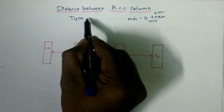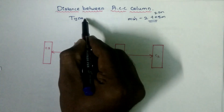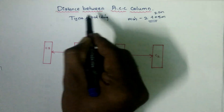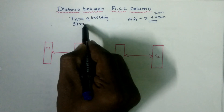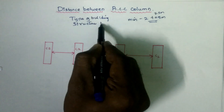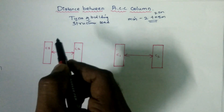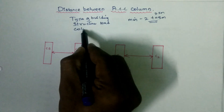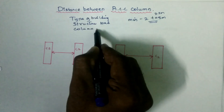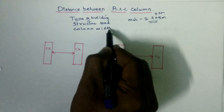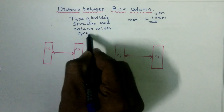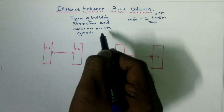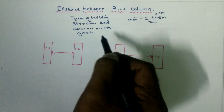First, what type of building are you doing — single-story or multi-story? Next is the structural load. We will consider the height of the RCC column and the width. Next is the grade of concrete — are you going to use normal concrete, mass concrete, or high-performance grade concrete?